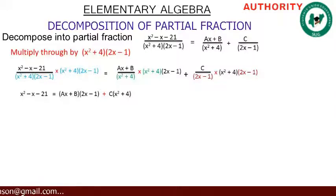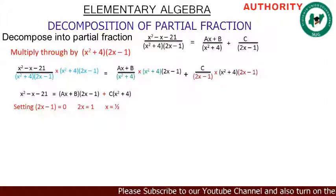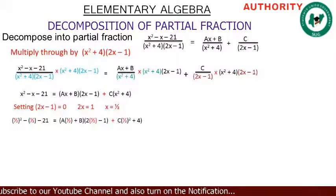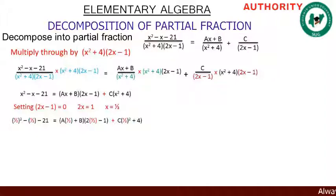We have two factors: 2x minus 1 and x squared plus 4. We can set one of them to zero. Setting 2x minus 1 equal to zero gives 2x equals 1, so x equals 1 over 2. Substituting x equals 1/2 into our expression: (1/2) squared minus 1/2 minus 21 equals (a times 1/2 plus b)(2 times 1/2 minus 1) plus c((1/2) squared plus 4). Now, (1/2) squared equals 1/4.